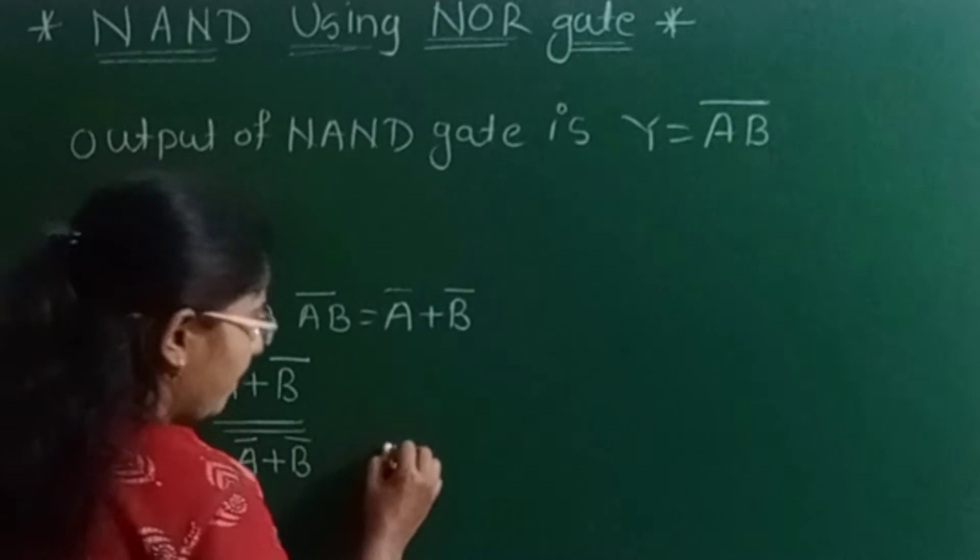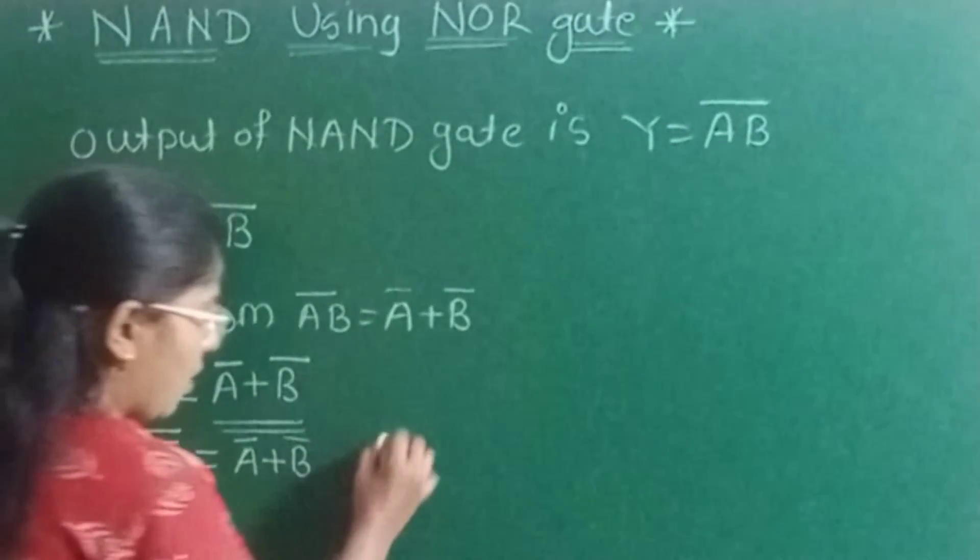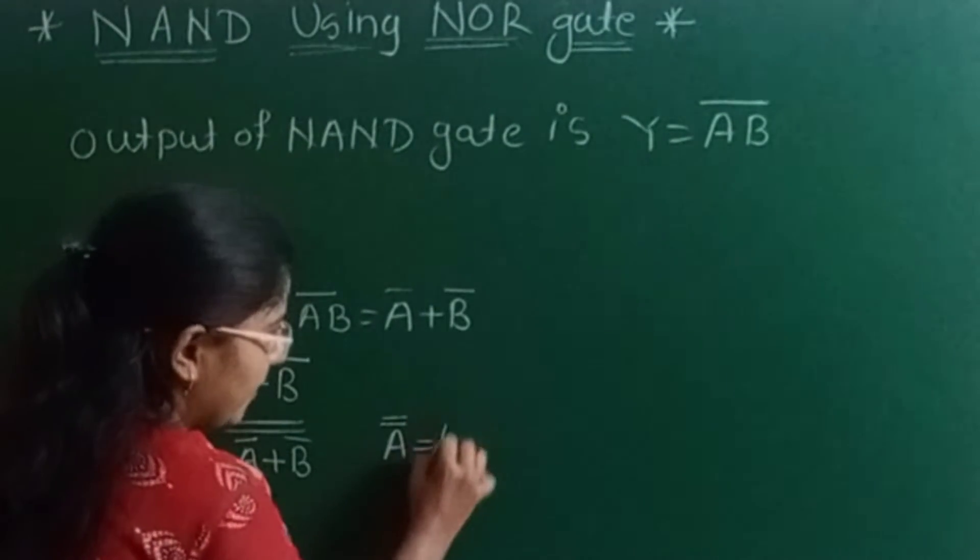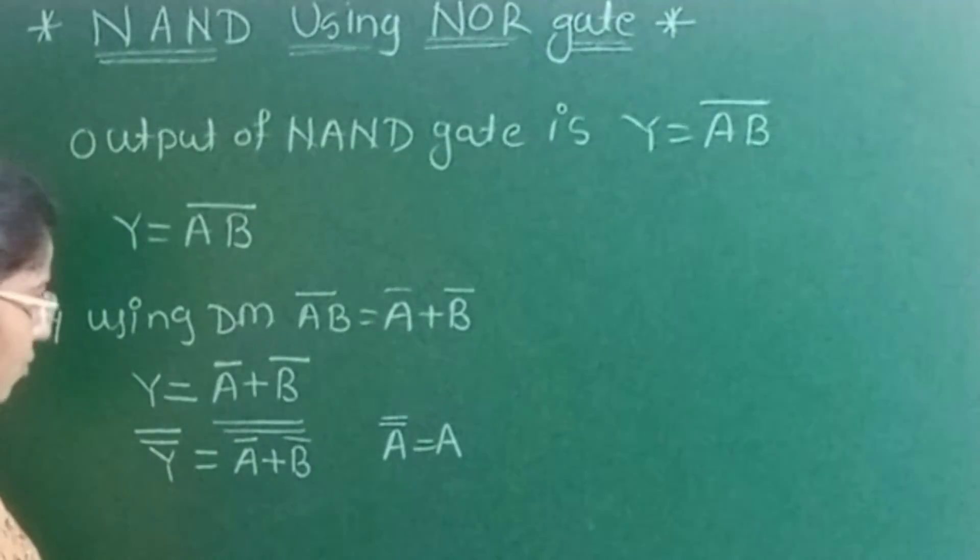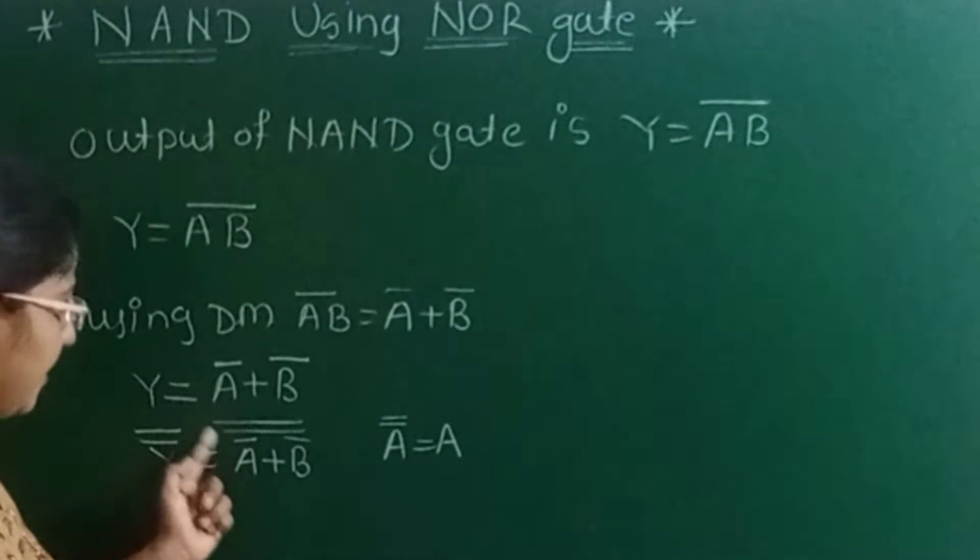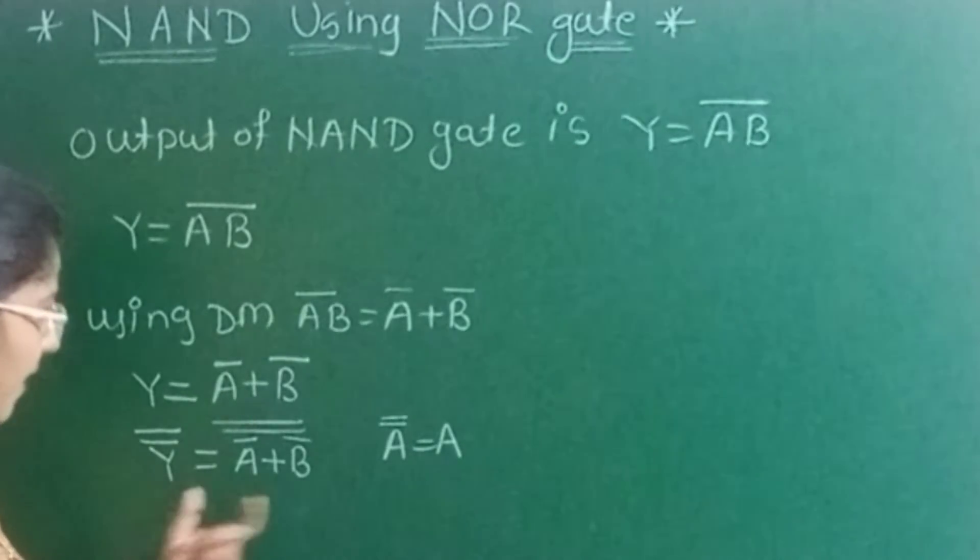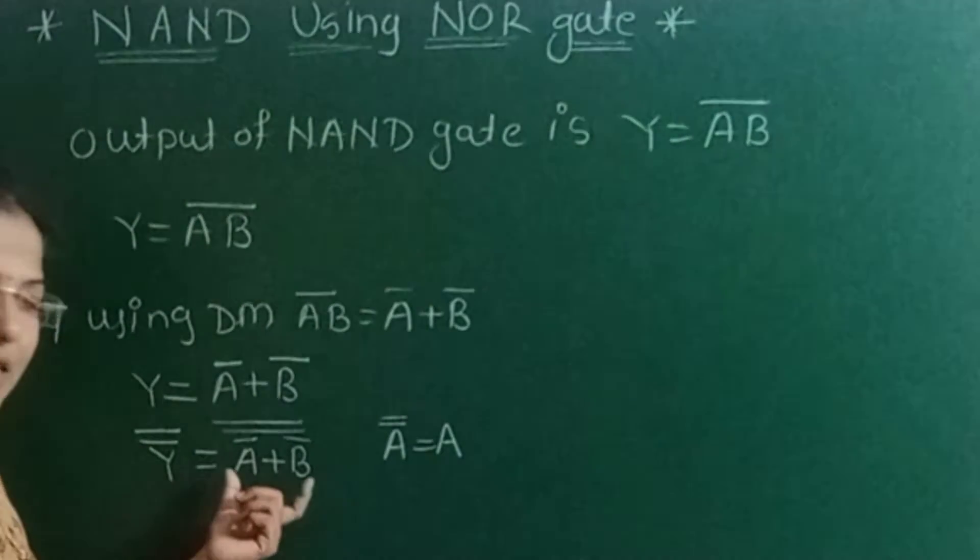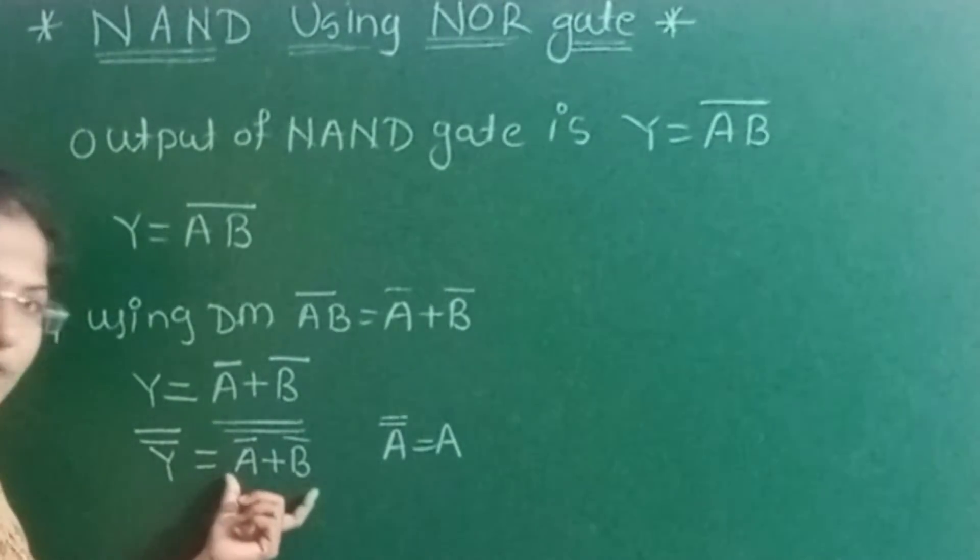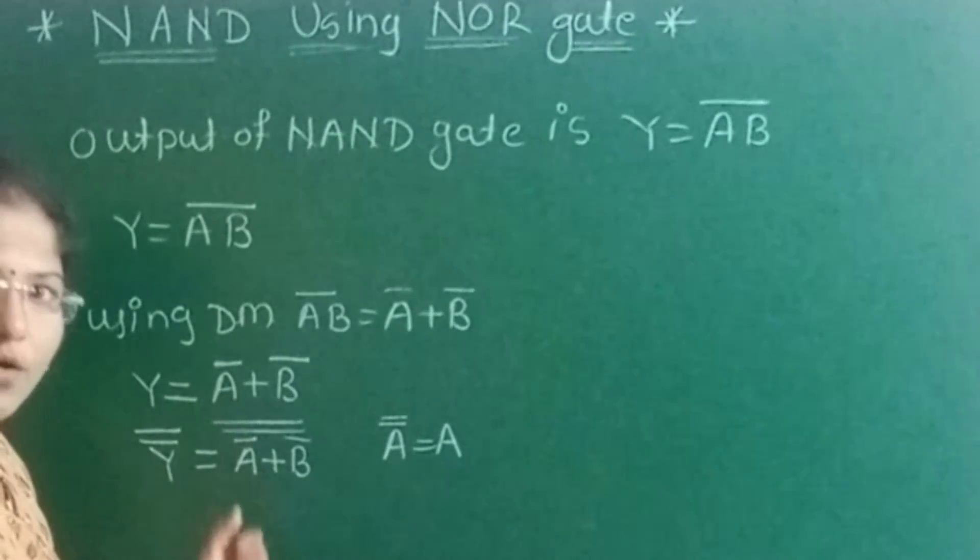Because by using the AND laws, A double complement is equal to A. So this A bar plus B bar double complement is equal to A bar plus B bar, and now we can design this circuit or equation by using the NOR gate.